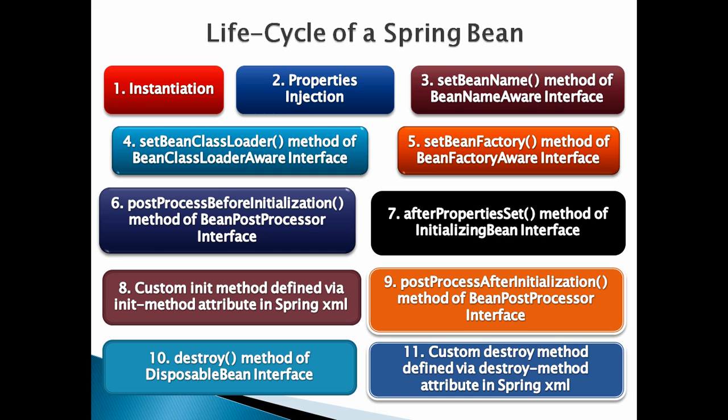Number 7: afterPropertiesSet method of the InitializingBean Interface. If a Bean has implemented the InitializingBean Interface, it has to provide an implementation for the method afterPropertiesSet. This method will be called by the Bean Factory after it has set all Bean Properties.